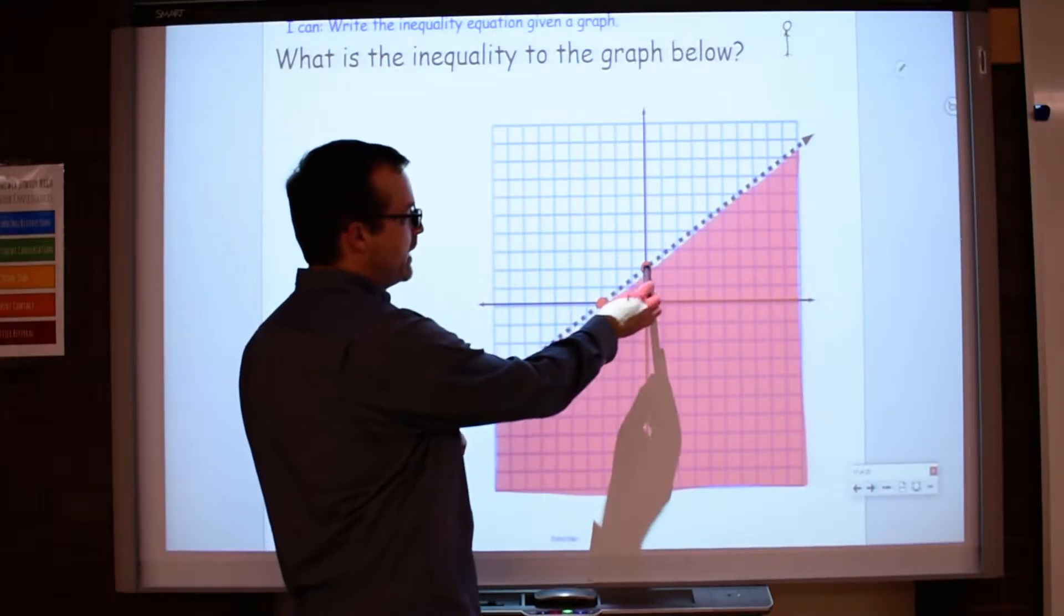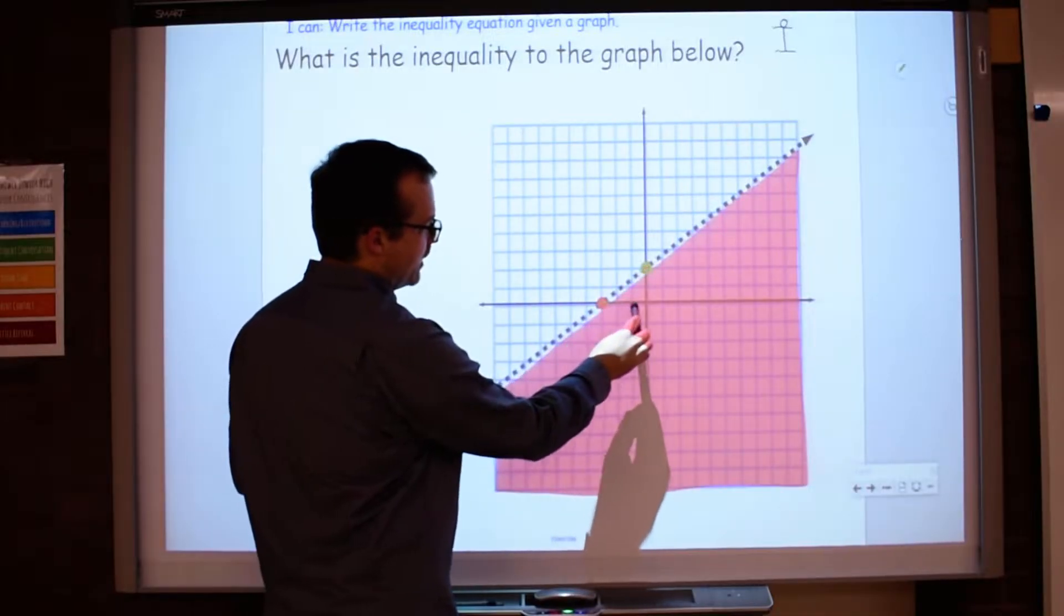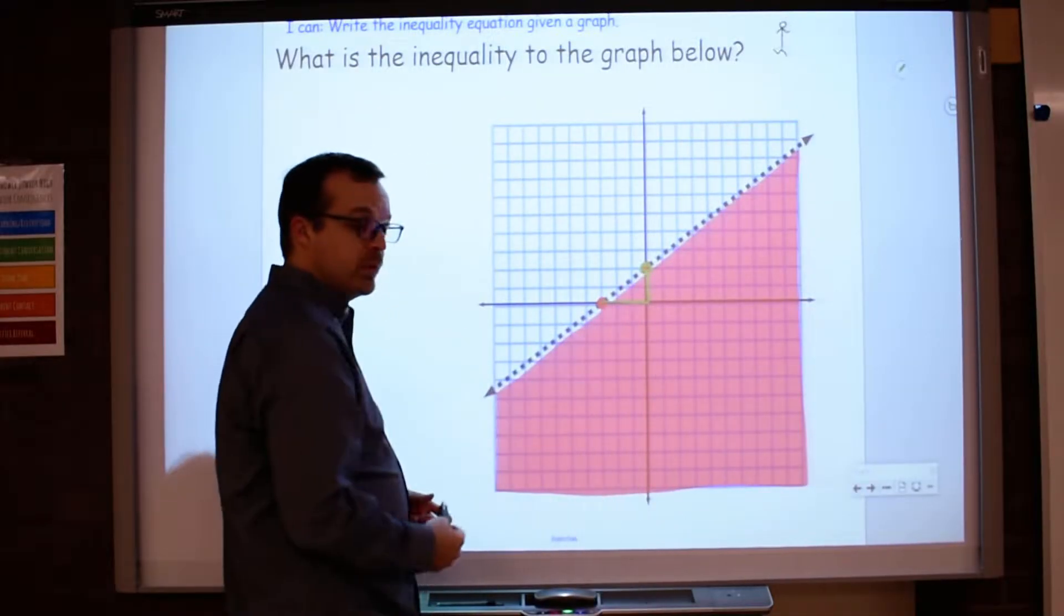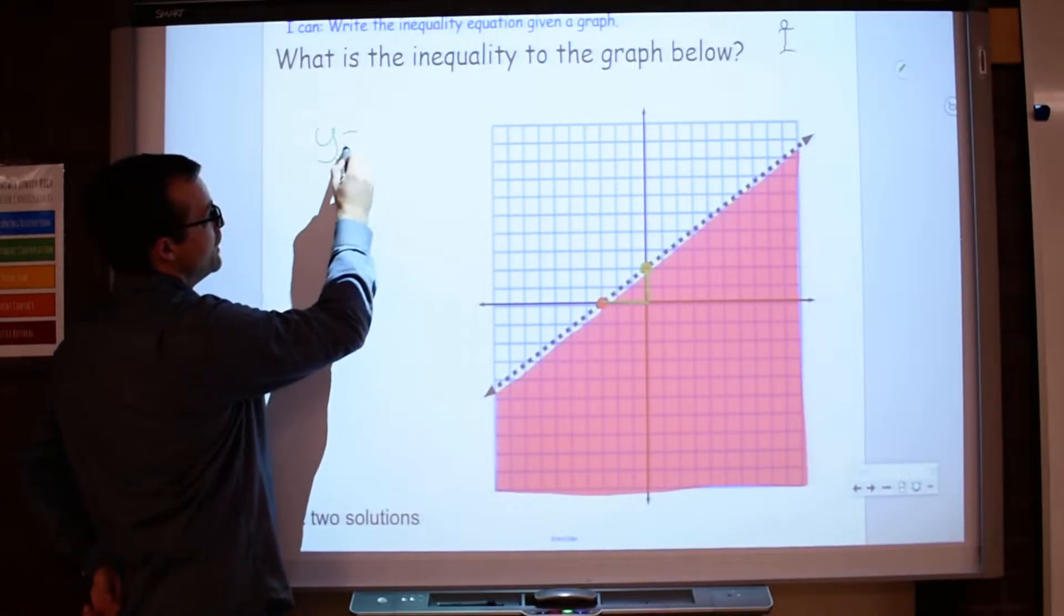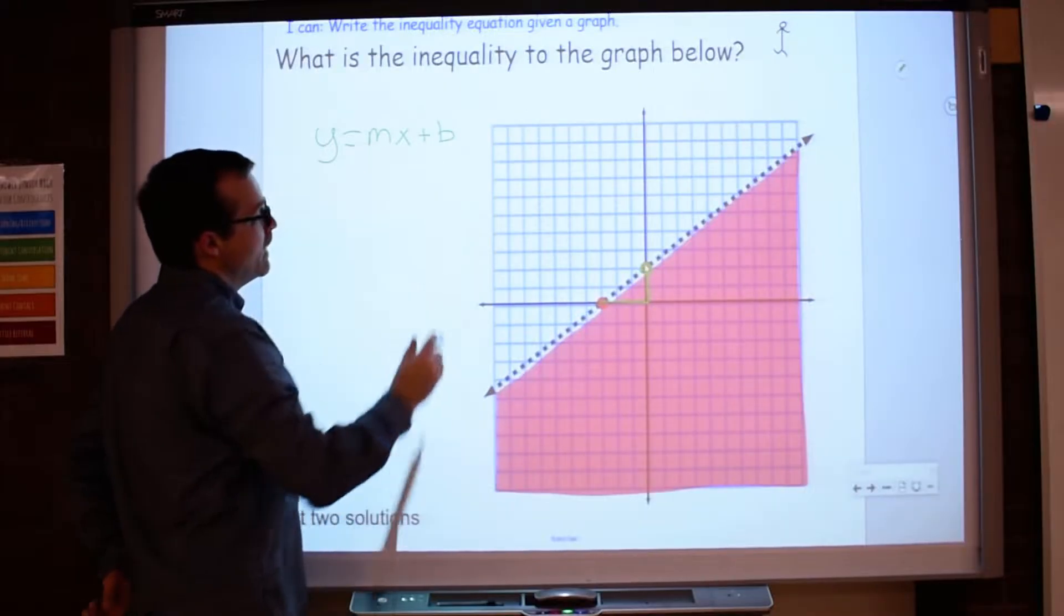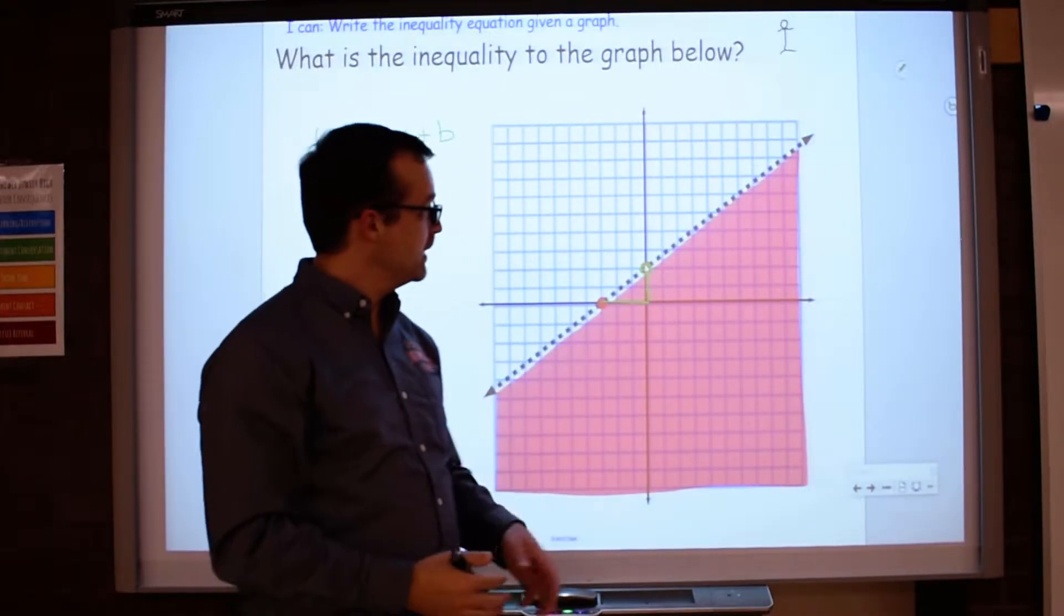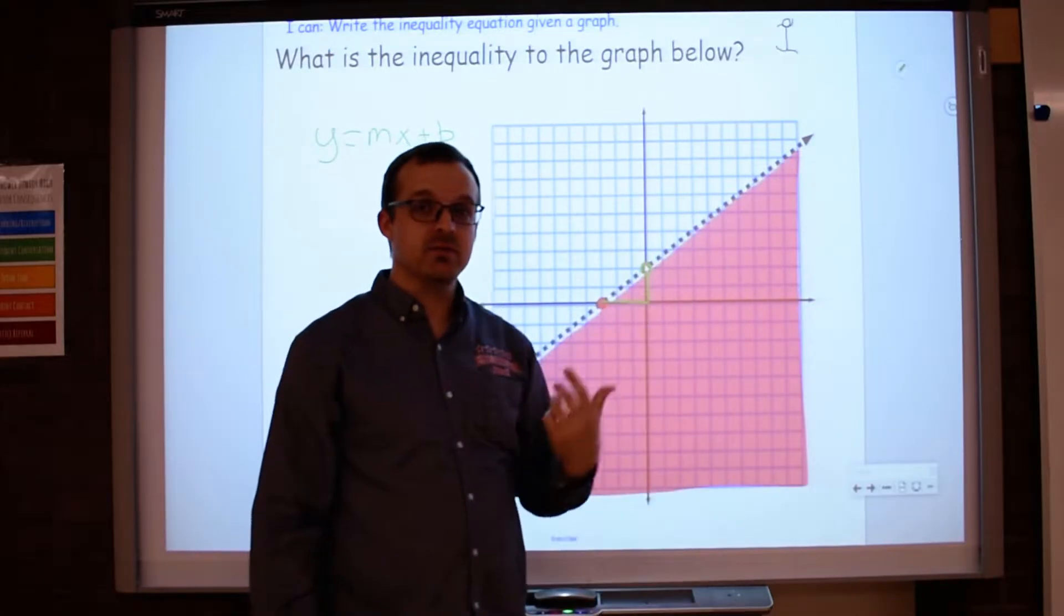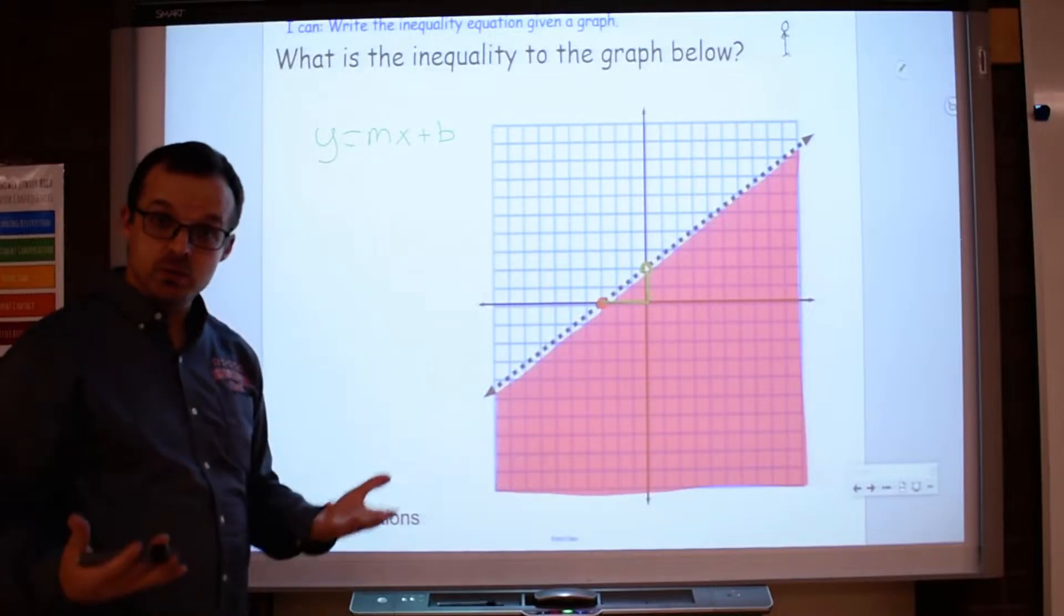First and foremost, I see a nice y-intercept here, and then I also see a pretty easily identifiable slope. So if we have slope and a y-intercept, we could use slope-intercept form, which is y equals mx plus b. If there wasn't a nice point, then I'd have to use something like point-slope form. But in this case, I have y equals mx plus b, which will be great.